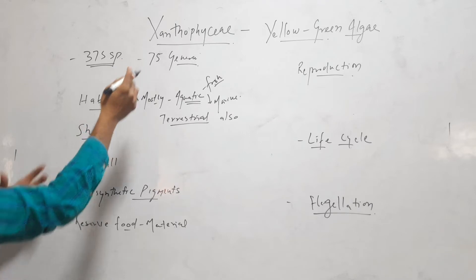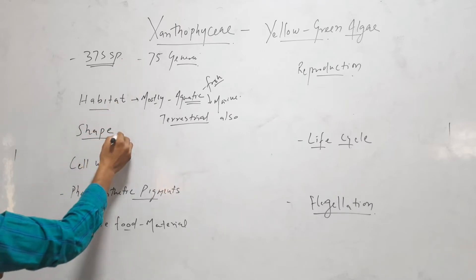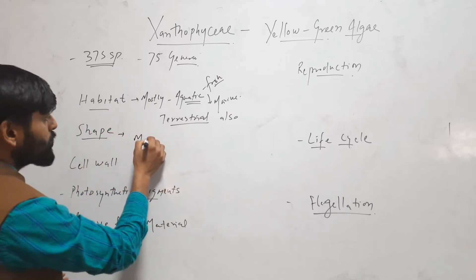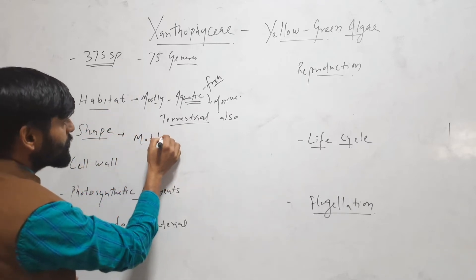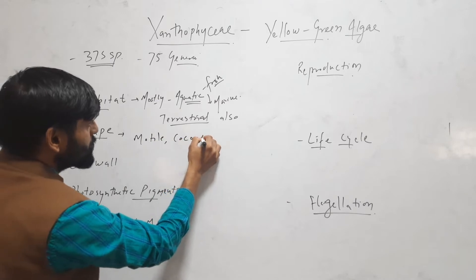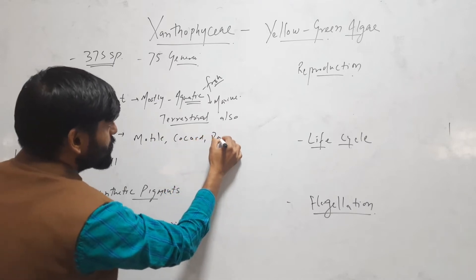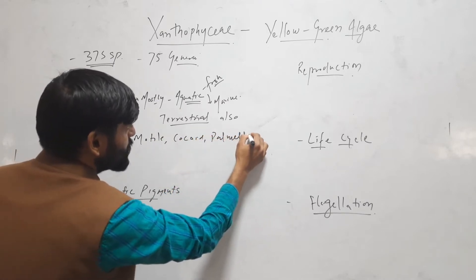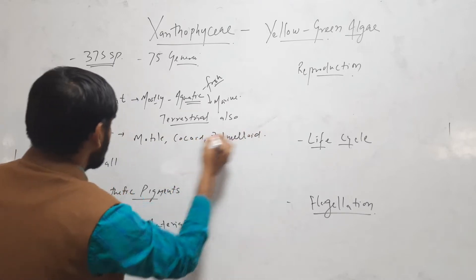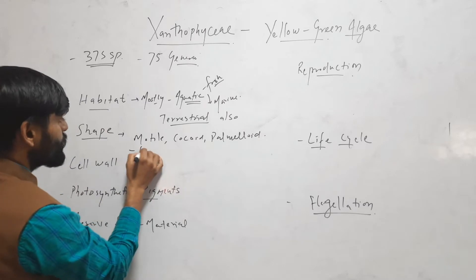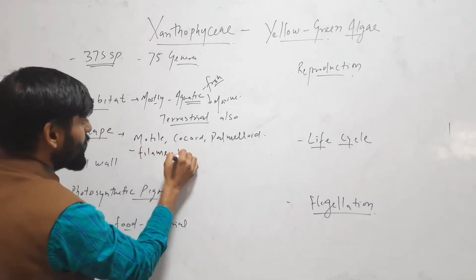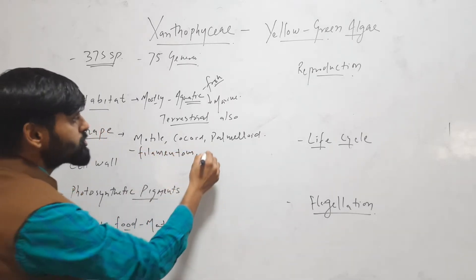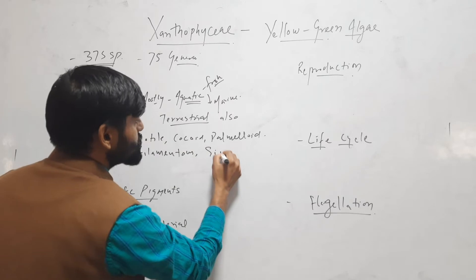When we talk about shape, Xanthophyceae has various shapes: from motile, to coccoid, to palmelloid, to filamentous, to siphonous. There are various types of shapes found in Xanthophyceae.